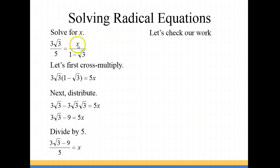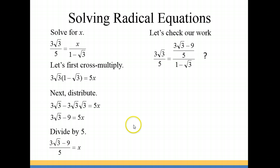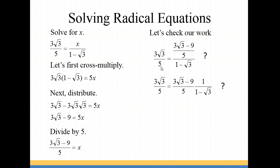So where we have x in our original equation we're going to put (3√3 minus 9) all over 5, and we want to find out if that's equal to 3√3 over 5. So I'm going to multiply by the reciprocal of the denominator and then just multiply straight across.